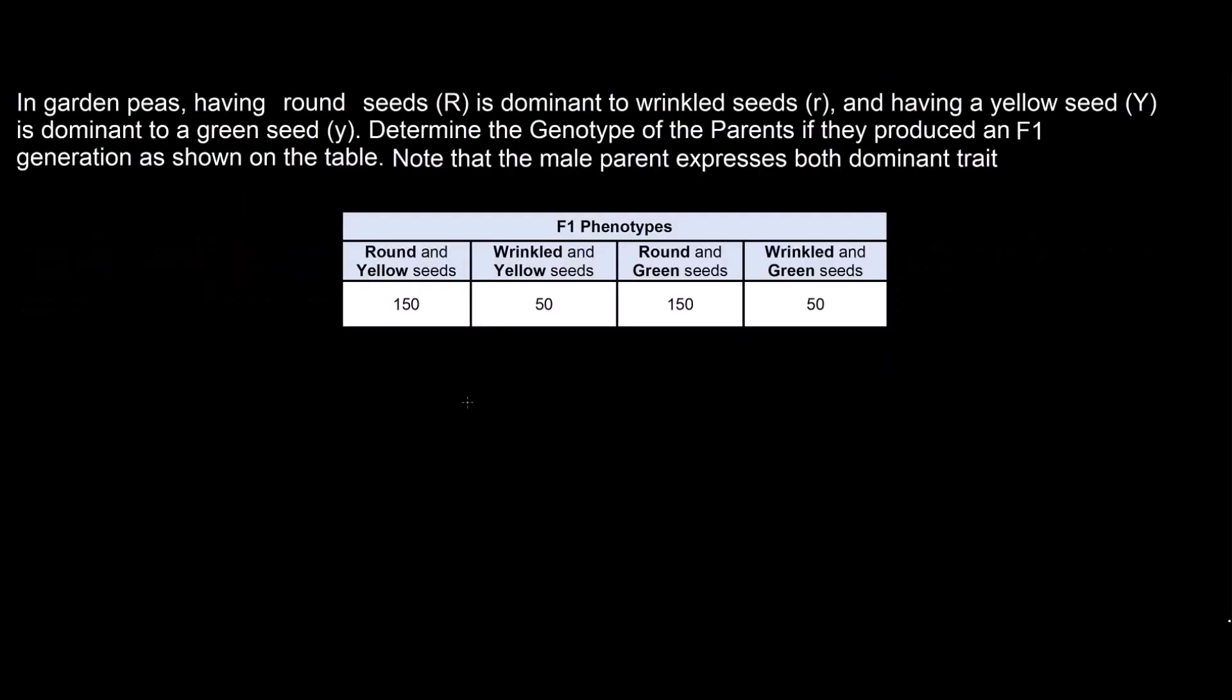In garden peas, having a round seed (R) is dominant to wrinkled seeds (r), and having a yellow seed (Y) is dominant to a green seed (y). Determine the genotype of the parents if they produce an F1 generation as shown in the table. Note that the male parent expresses both dominant traits.